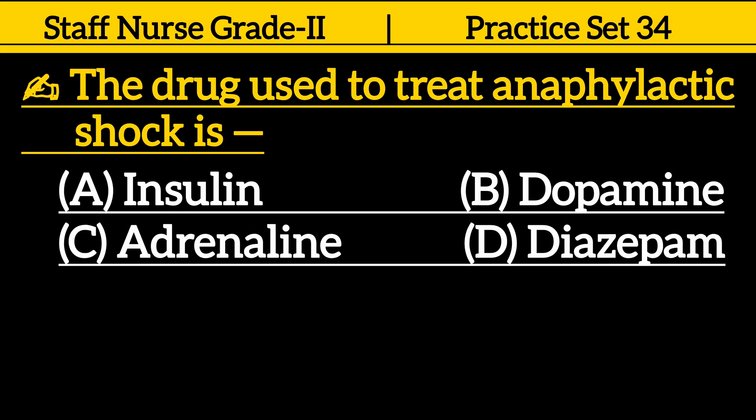Next one is, the drug used to treat anaphylactic shock is: option A. Insulin, option B. Dopamine, option C. Adrenaline, option D. Diazepam.